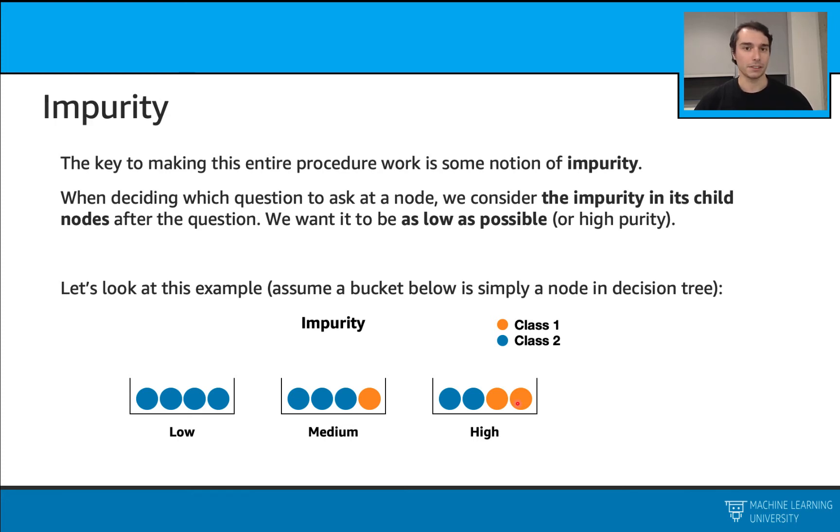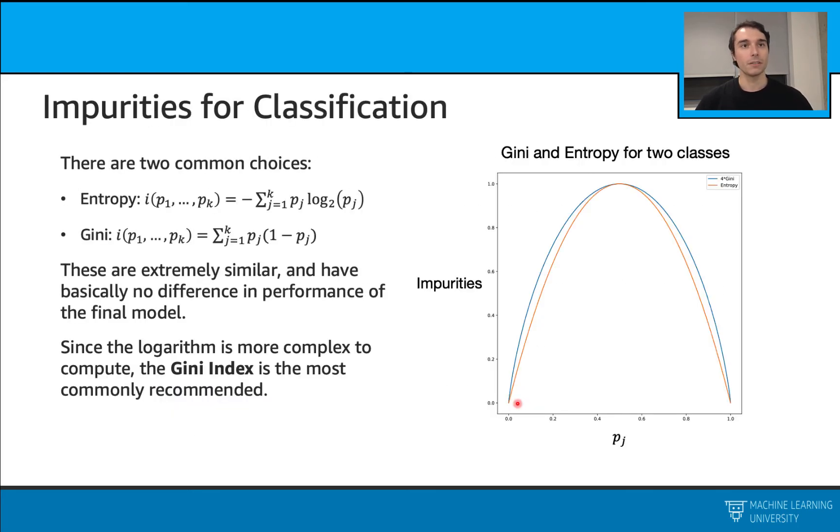When we are building our trees, we are not going to use these levels, but we need to calculate some numbers. For classification problems, we have these two common choices: entropy or Gini.